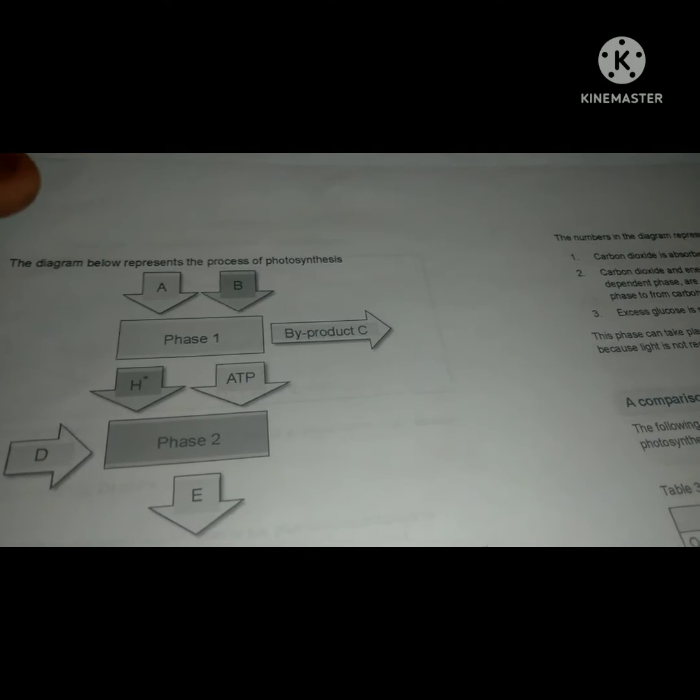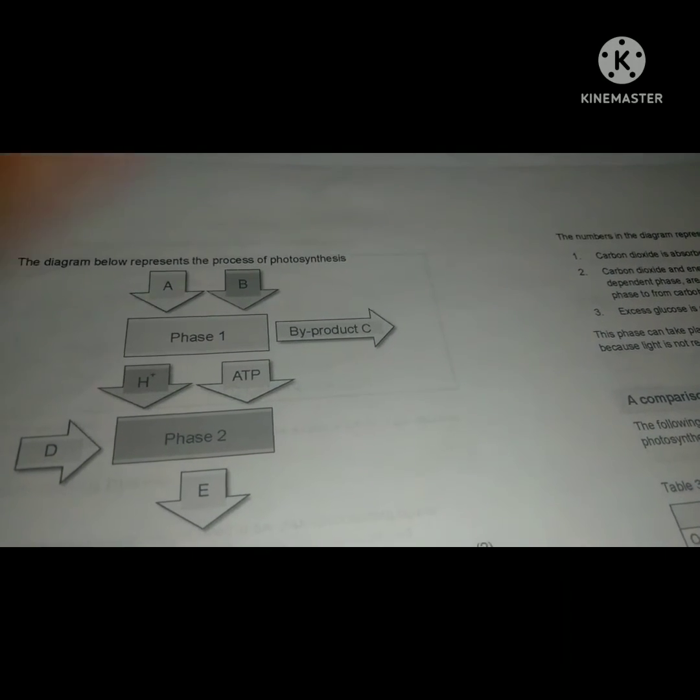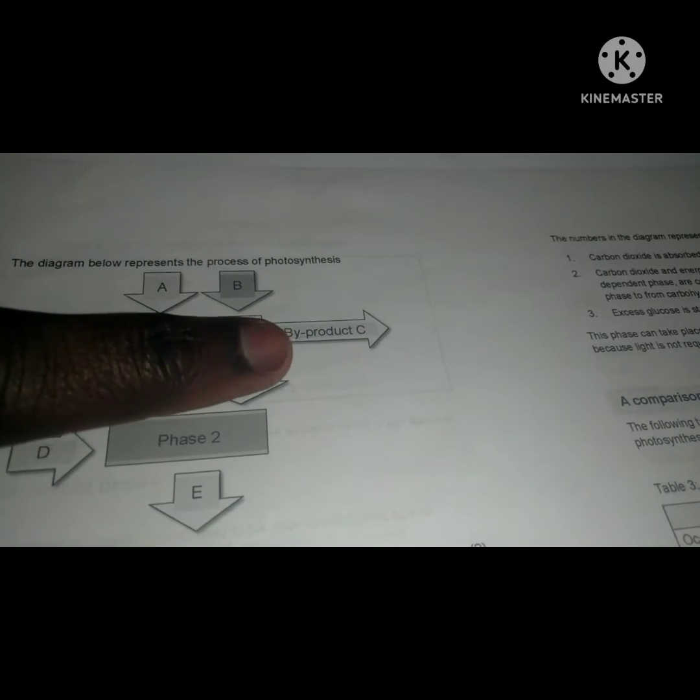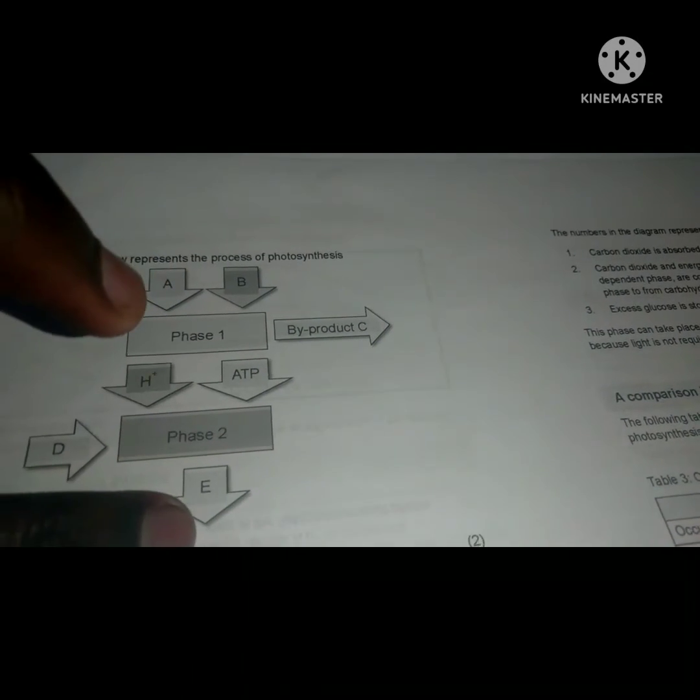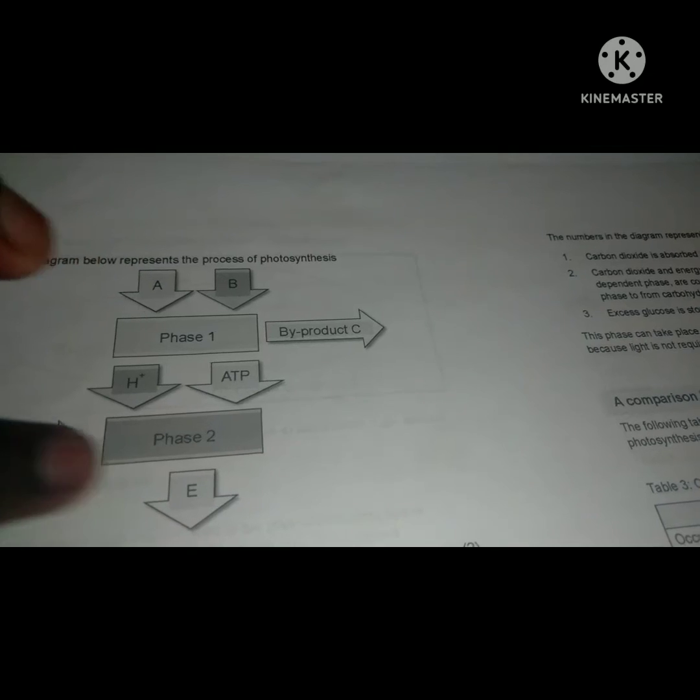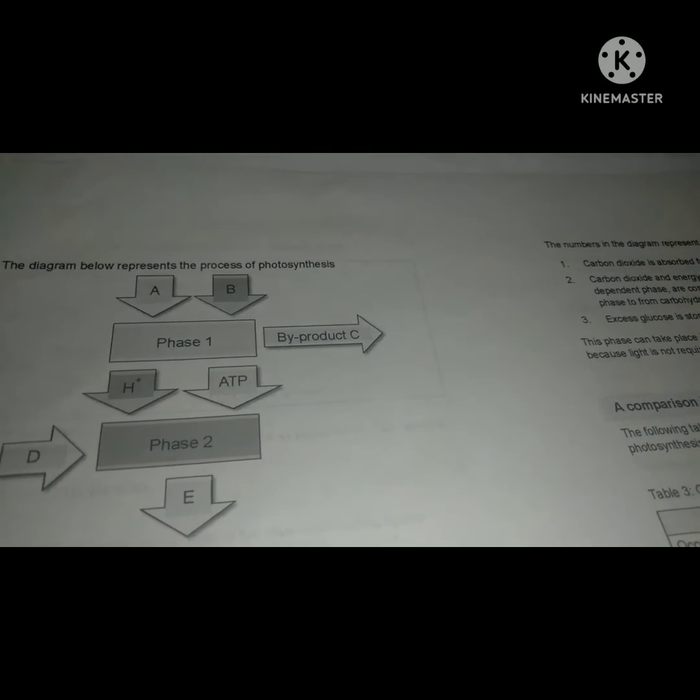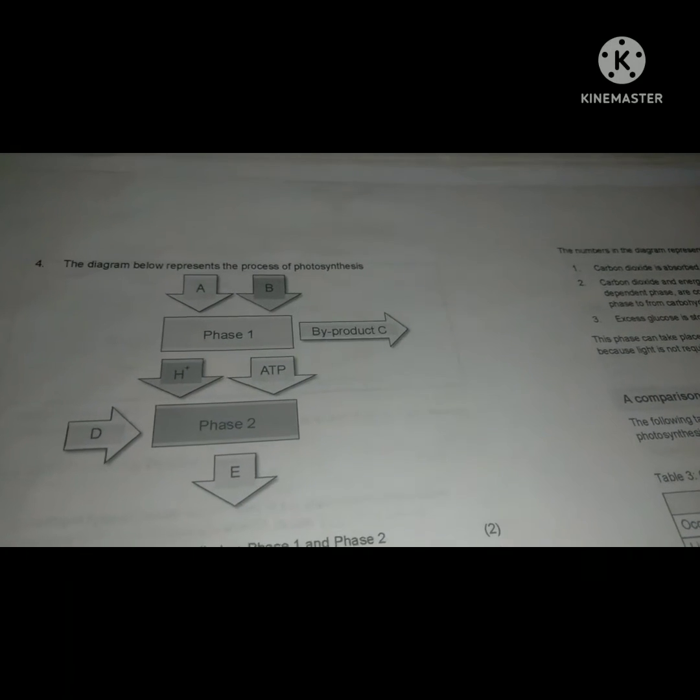Carbon dioxide reacts with the hydrogen and ATP to form glucose. So E will be glucose, which is the product formed by the combination of D, H+, and ATP in phase 2, which is the dark phase. Thank you for watching.